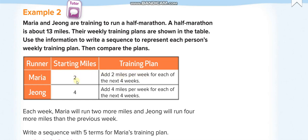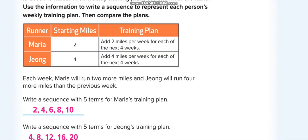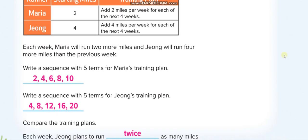So for Maria, her starting miles are 2 and she's adding 2 miles per week. So for Maria we'll keep on adding 2: 2 plus 2 is 4, then plus 2 is 6, plus 2, and so on. Like this: 2, 4, 6, 8, 10. Each time we'll add 2. The rule is plus 2 for Maria.